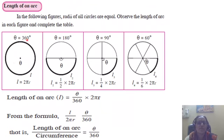This is theta = 360 degrees. Observe: L is 2πr — the length of an arc here is 2πr, the circumference of a circle. Here theta is 180 degrees; you can observe 2πr divided by 2, that is L2. For theta = 90 degrees, you can write 2πr divided by 4 — the fourth part, this is 2πr divided by 4.